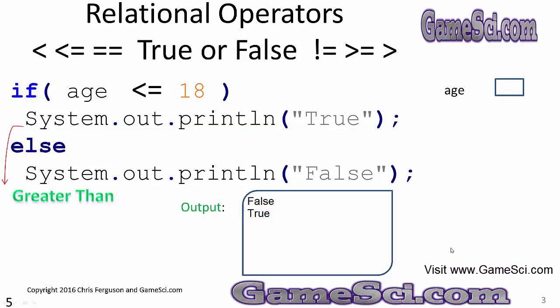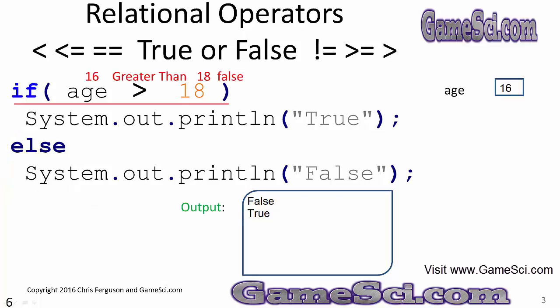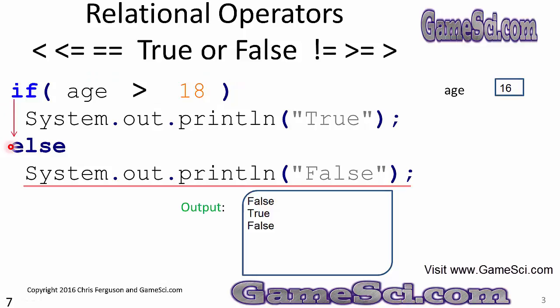Let's do the greater than operator now. One of the reasons I'm showing you different values in the variables is I want you to understand that every time this code executes, it could take a different path — it all depends on what the value in age is and what the relational operator is. This is what makes a computer programmable. With 16 in the age variable, 16 greater than 18 is false, so it will choose to execute the else portion of the code and output the word false.